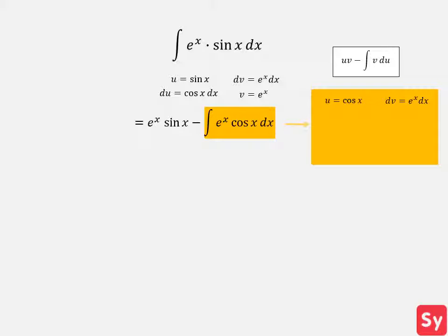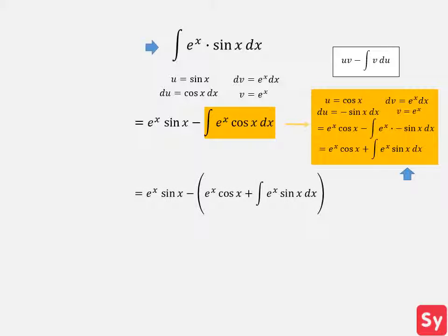We then simplify and get e to the x times cosine of x plus the integral of e to the x times sine of x dx. This integral looks pretty familiar — it's the integral we're trying to solve. We can't use integration by parts again to solve this integral because it will just keep taking us into a never-ending loop. So we will leave it as is and substitute this expression in for the integral.